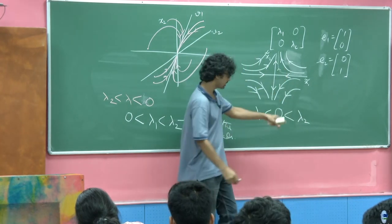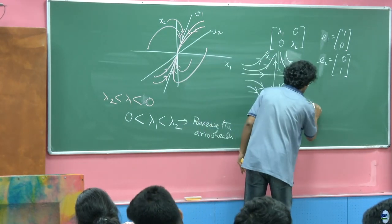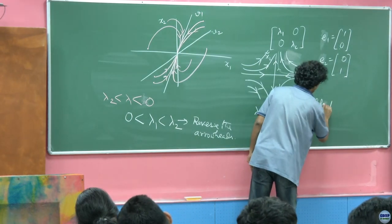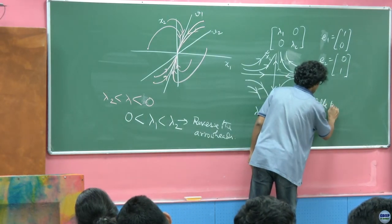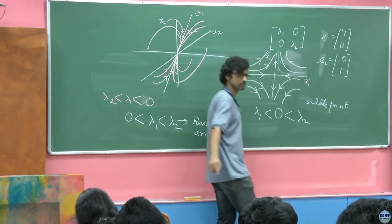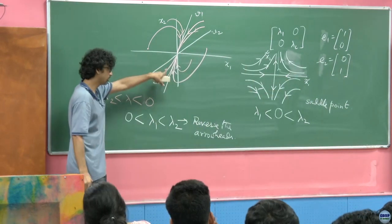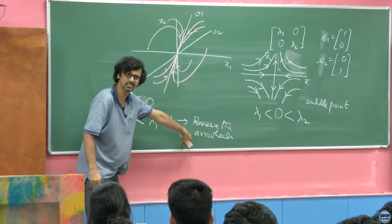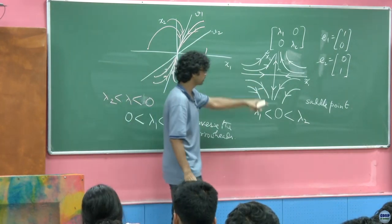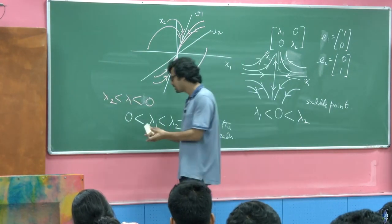This is what we call a saddle point for this dynamical system. The previous case with both negative eigenvalues was a stable node; reversing arrowheads gives an unstable node. This one is a saddle point.